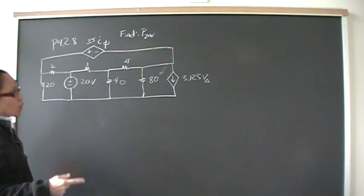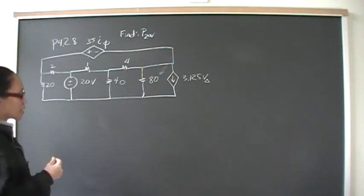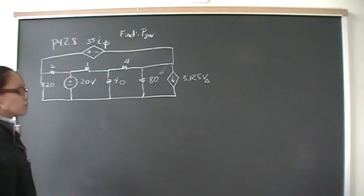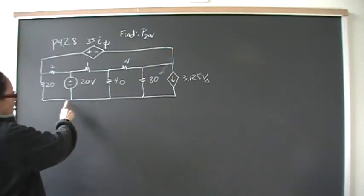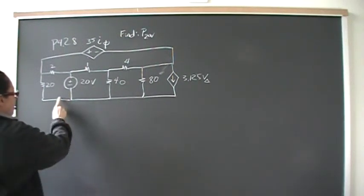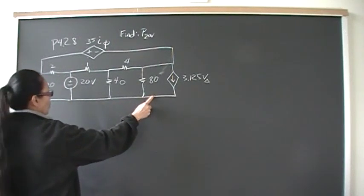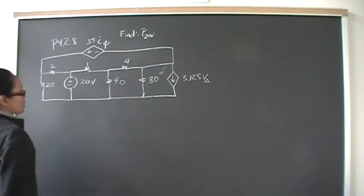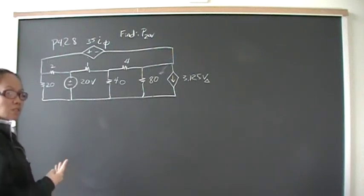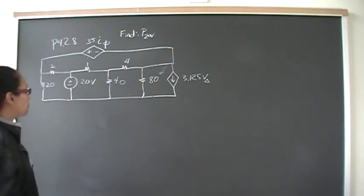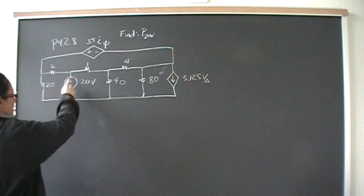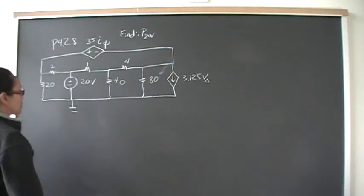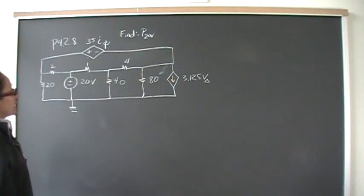If we immediately recognize supernodes, then we know that one node is a supernode, and we really have four nodes to work with. We need to choose a ground node. The ground node connects five circuit elements, so we want to choose the node with the most circuit elements to be the ground. Since I know this voltage drop right here, I'm going to choose that to be my ground.